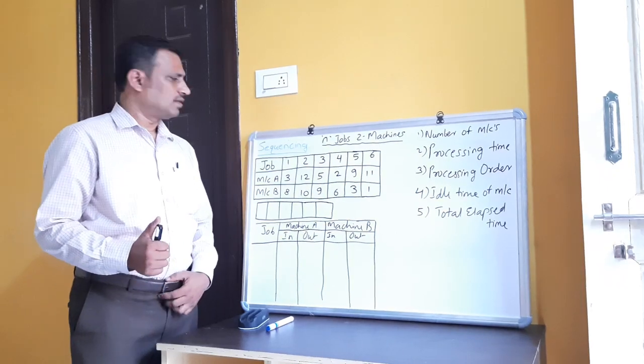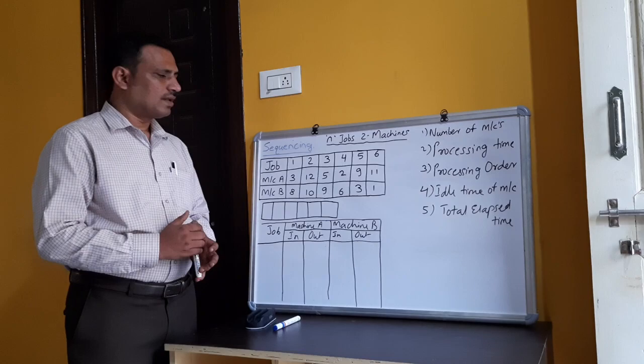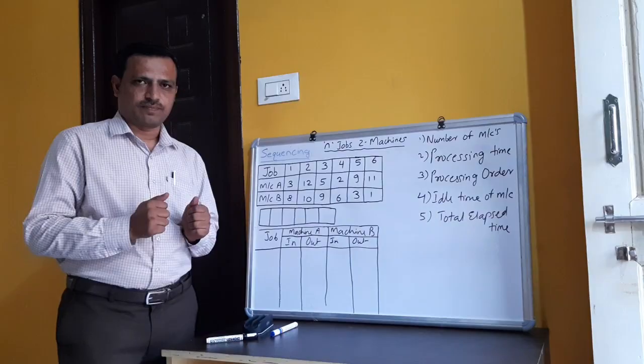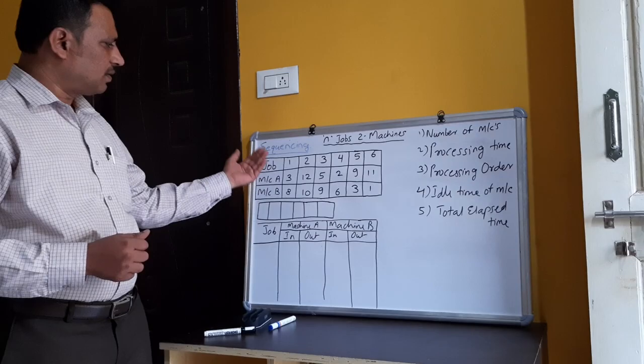Today we will start with the sequencing chapter. The name itself indicates that we have to sequence the jobs in the right order to get the minimum processing time or total elapsed time. This is the main aim of the sequencing chapter. Before going to the problems, we will first cover some terminologies used in sequencing.